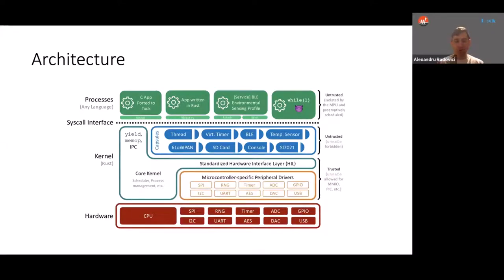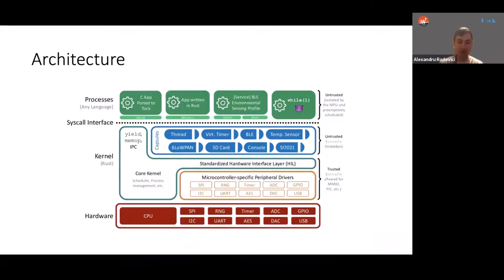On top of the kernel, we have the capsules — high-level drivers that either export system call interfaces to applications or export services to other capsules. From the kernel's point of view these are untrusted, meaning they only contain safe Rust code and cannot directly access memory. The glue code between these two levels is the actual kernel, which is trusted and does make use of unsafe. It handles processes, the scheduler, and all interfaces that capsules use to communicate with each other.